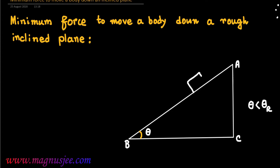The body will be at rest on this inclined plane. This is a body having mass M, and its weight Mg acts vertically downwards as shown in the figure. This is the direction of the weight Mg of the body.